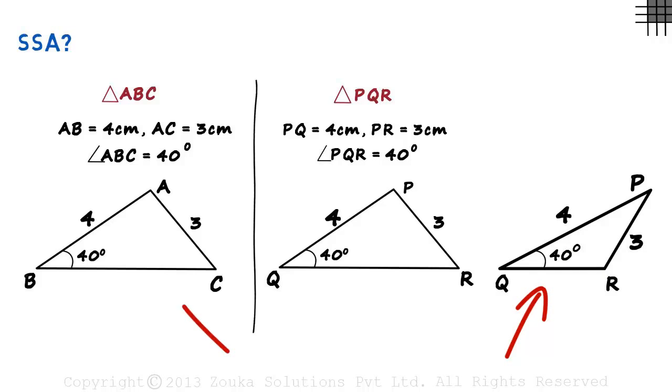In this case, it is not congruent to triangle ABC. Which means that SSA may or may not work.